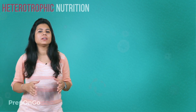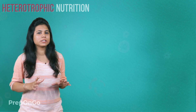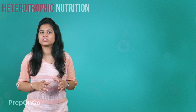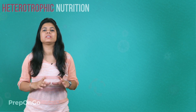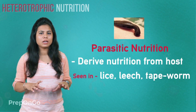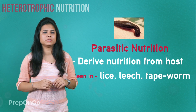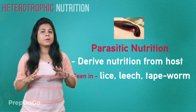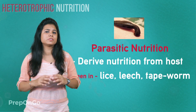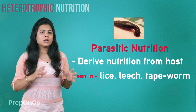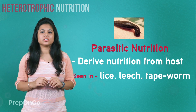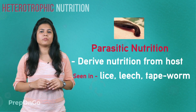Similarly, there are some organisms which derive their nutrition from plants and animals without killing them, and they are called parasites. Many organisms follow this parasitic nutritive strategy, like lice, leeches, and tapeworms.